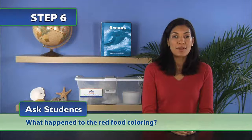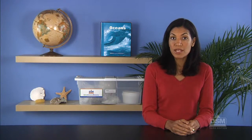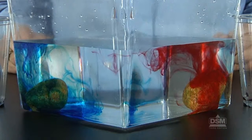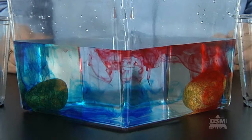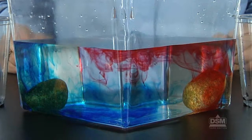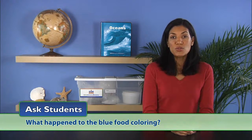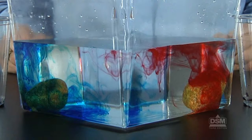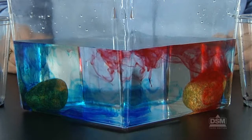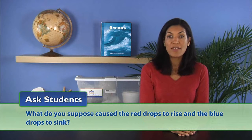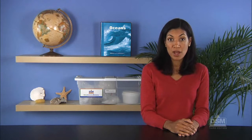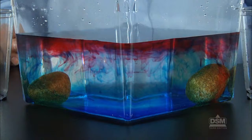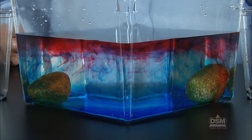Ask students what happened to the red food coloring. Students should have observed that the food coloring initially sank slowly but then began to rise again. It then started to spread out across the surface of the water, moving slowly toward the opposite corner of the container. Then ask what happened to the blue food coloring. Students should note that the blue food coloring sank quickly to the bottom and then slowly started to move across the bottom toward the opposite corner. Finally, ask students: what do you suppose caused the red drops to rise and the blue drops to sink? Students may suspect it has something to do with the temperature of the rocks.